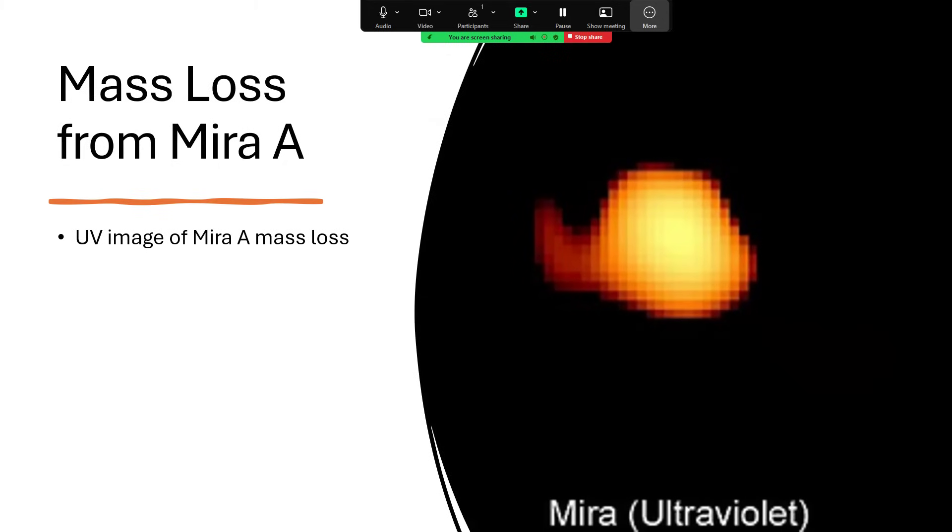Here's an image taken in ultraviolet light, and you can see a spur of material being emitted by Mira A, which is then spiraling across, of course, attracted by the gravity of its companion Mira B, the white dwarf.